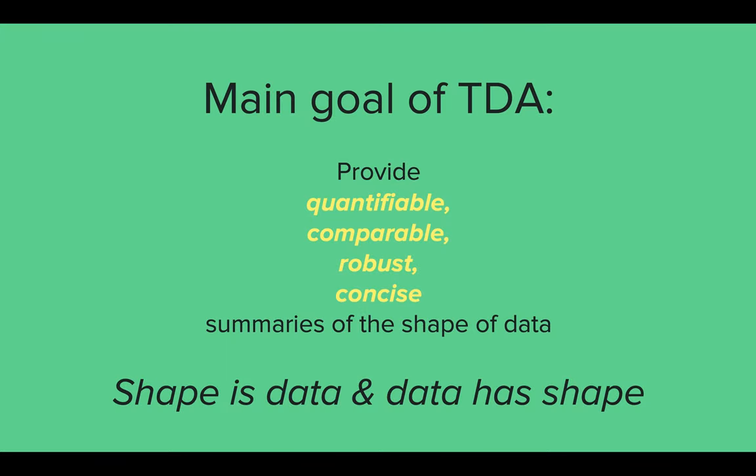So TDA, topological data analysis, we are interested in this because it can provide quantifiable, comparable, robust, and concise summaries of the shape of data. And there's a really great motto for topological data analysis that really captures what we're trying to do. It's that shape is data and that all data have shape. At the core of this we're quantifying the shape and distribution of data and always remember that you can always convert shapes into data and vice versa.